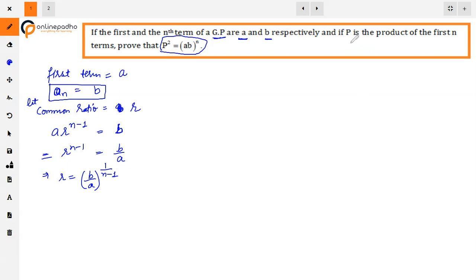Now what is given next? If P is the product of first n terms. If we take the product of first n terms, then that is P. P is equals to product of first n terms, meaning A into AR into AR square up to AR raised to power n minus 1.